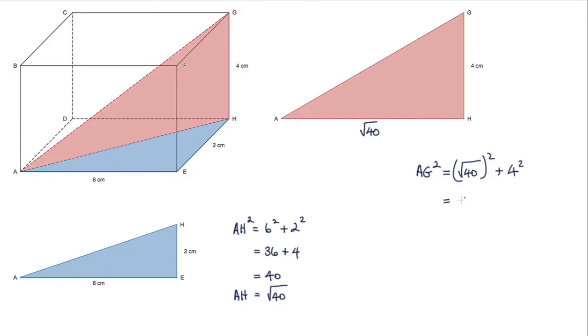The square root of 40 squared is just 40, and 4 squared is 16, so we get 56.